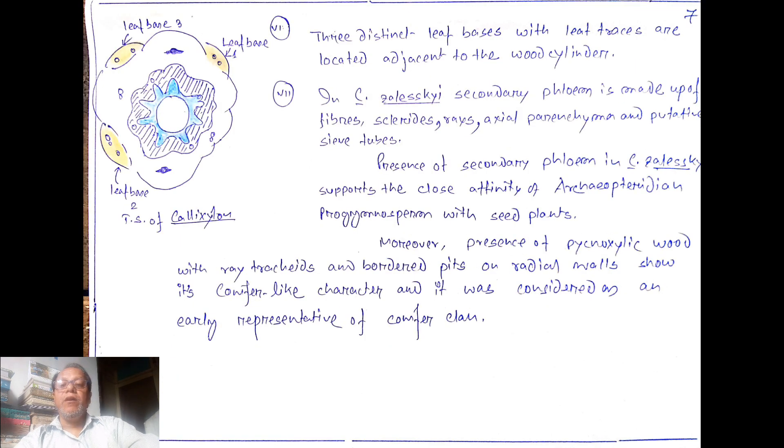In the diagram three distinct leaf bases are observed. These are yellow colored. For your convenience, I make them yellow. Leaf base 1, leaf base 2, and leaf base 3 having leaf traces. Three distinct leaf bases with leaf traces are located adjacent to the wood cylinder.